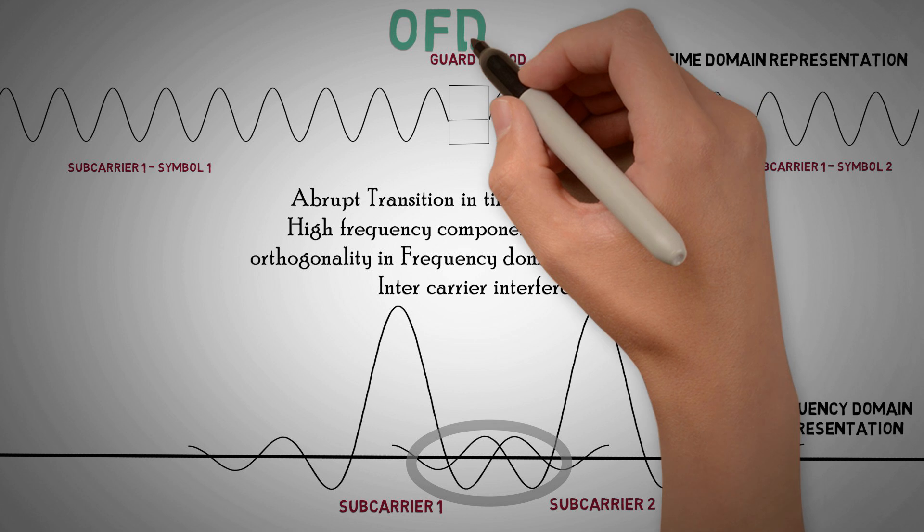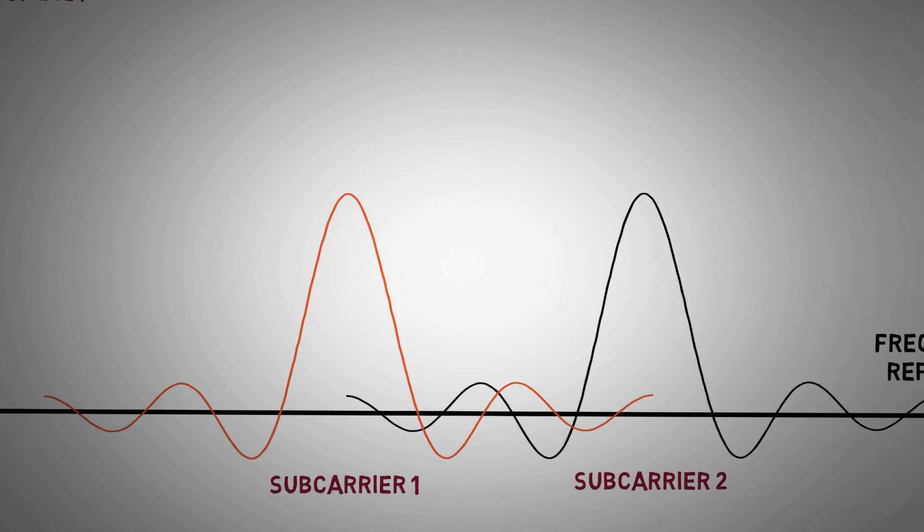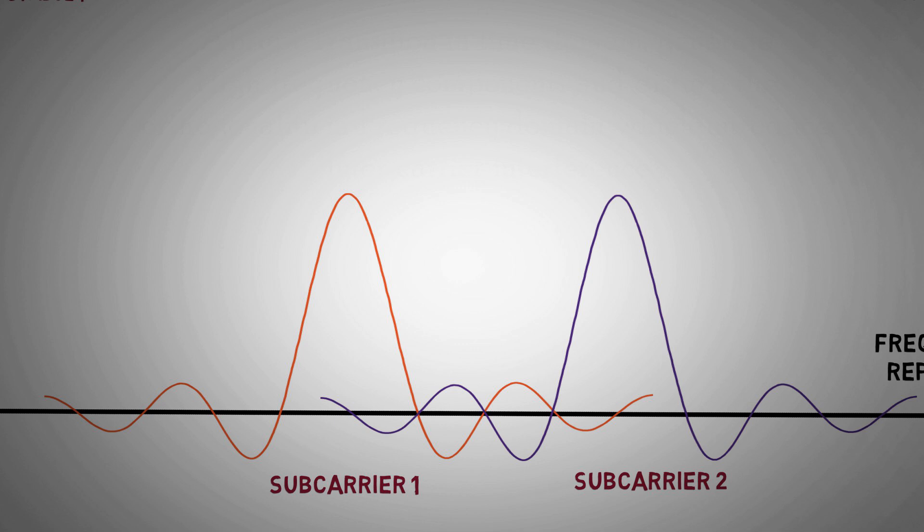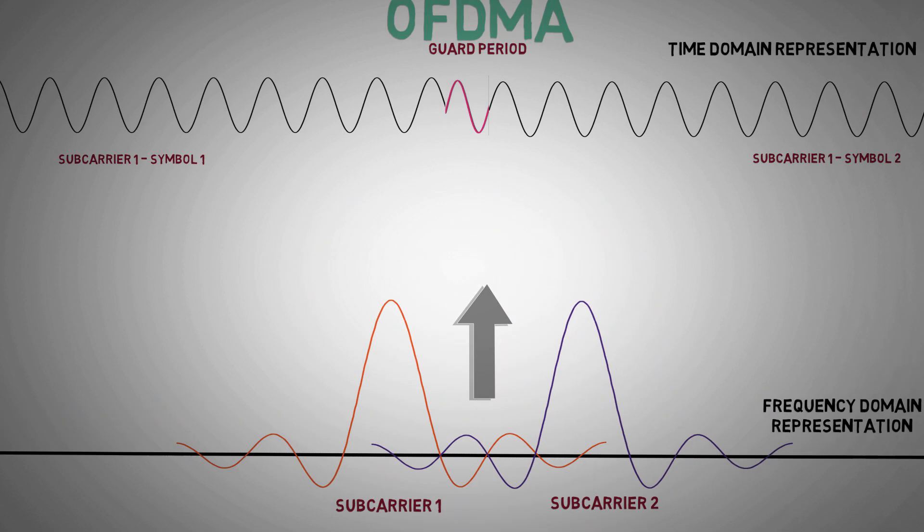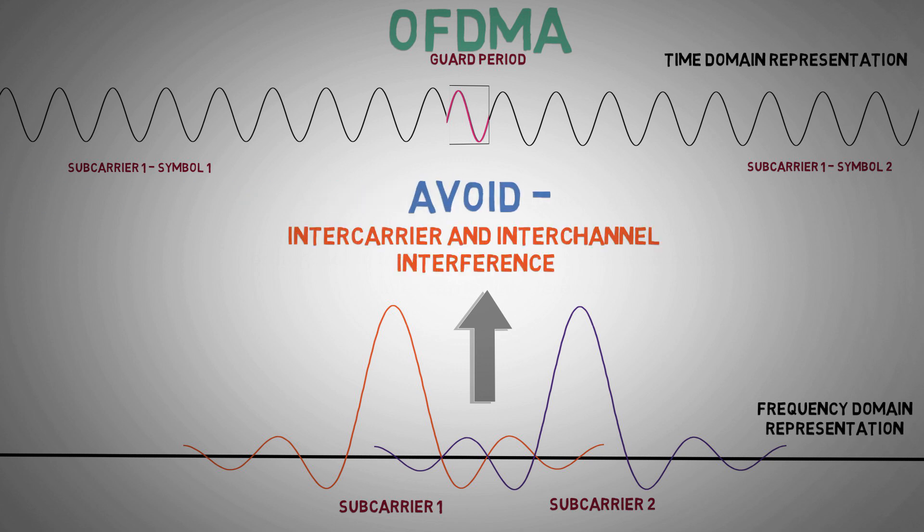So in OFDMA, we employ a more complex kind of guard period called cyclic prefix, in which end part of a symbol is transmitted in the preceding guard period. It also ensures orthogonality between the subcarriers by keeping the OFDM symbol periodic over the extended symbol duration, and therefore avoiding inter-carrier and inter-channel interference simultaneously.